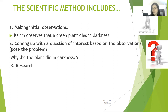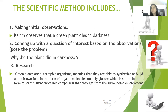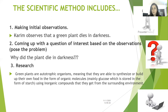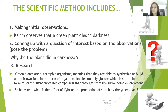And to answer his question, he made a research. Karim discovered that green plants are autotrophic organisms, meaning that they are able to synthesize or build up their own food in the form of organic molecules, mainly glucose, which is stored in the form of starch. These plants use inorganic compounds that they get from their surrounding environment. But still, this research developed a new question.